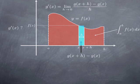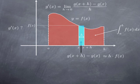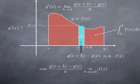So for h small, this difference g(x + h) minus g(x) should be close to h times f(x). Or dividing both sides by h, the difference quotient g(x + h) minus g(x) over h should be close to f(x) when h is small. So it's a far cry from an actual proof that the derivative of g at x is f(x), but this indicates that it is a reasonable guess.